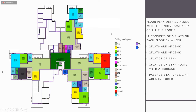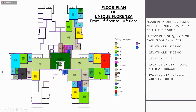The second plan shows the floor details of the actual building, from the first to the tenth floor. As you can see, it consists of six flats on each floor: two flats of 3 BHK, two flats of 2 BHK, one flat of 4 BHK, and one flat of 2 BHK that also comes with a terrace — the only flat that includes a terrace or balcony. The passage, staircase, and lift area are also included.